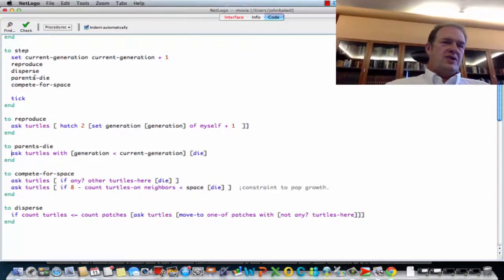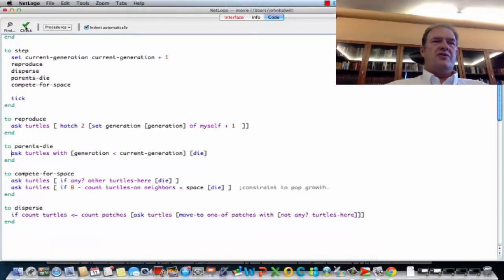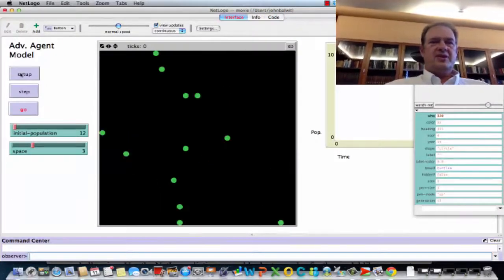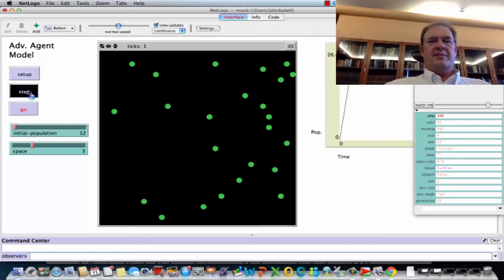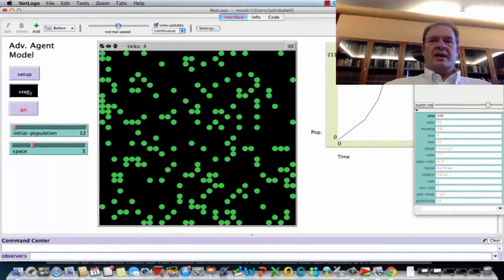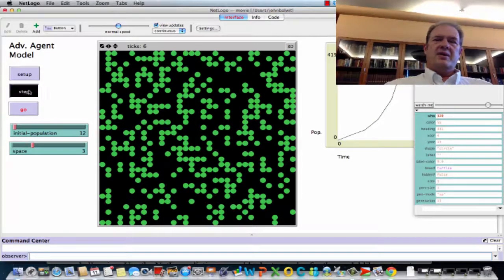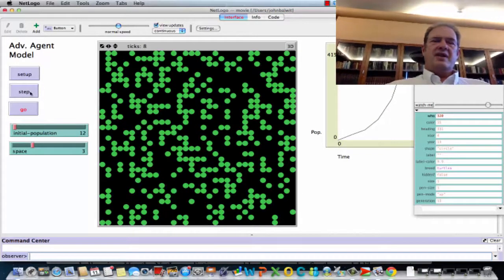Everything's turned on. We just, uh, change the order of that. So set up. Step. Okay. Now we get exponential growth and then we get a kind of a leveling off.